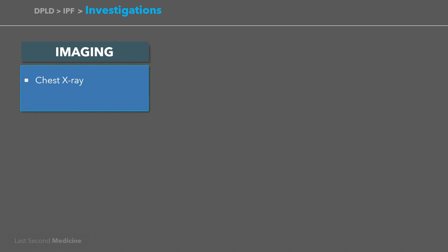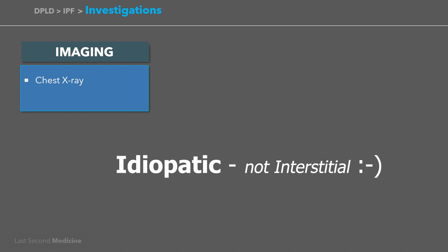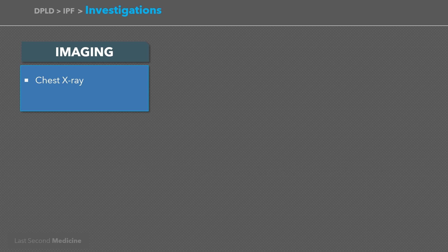Chest radiographs are only helpful in established idiopathic pulmonary fibrosis and will appear as bilateral lower lobe and subpleural reticular shadowing. The chest X-ray may be normal in individuals with early or limited disease. However, high-resolution CT scan is the preferred modality for early diagnosis.